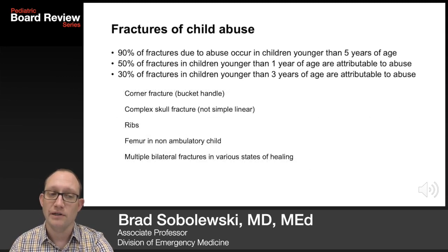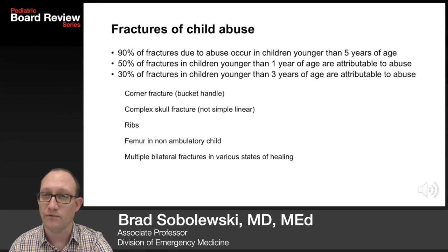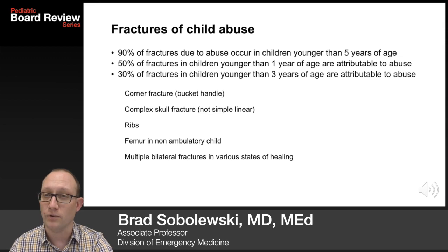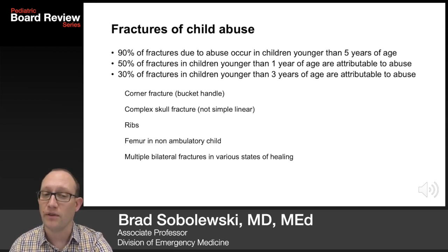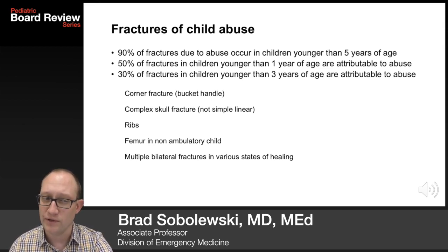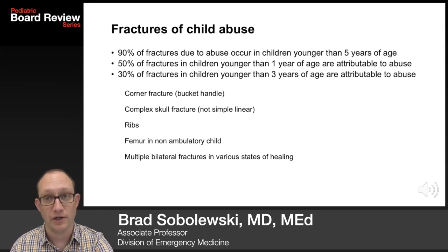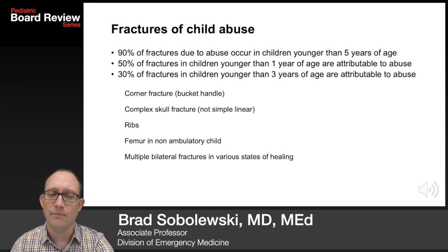In child abuse, 90% of fractures caused by abuse are seen in children younger than five years of age. 50% of fractures in children younger than one are attributable to abuse, and 30% of fractures in children younger than three years of age are attributable to abuse. Key fractures to know for the boards include the corner or bucket handle fracture, a complex skull fracture (not a simple linear one), rib fractures, the femur in the non-ambulatory child, and multiple bilateral fractures in various states of healing.